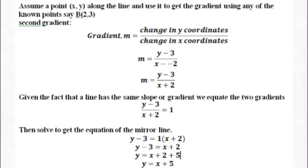Since this line has the same gradient, we equate the two calculated gradients. In this case, we will have (y - 3) over (x + 2) equal to 1. On solving the equation, we will obtain y = x + 5.